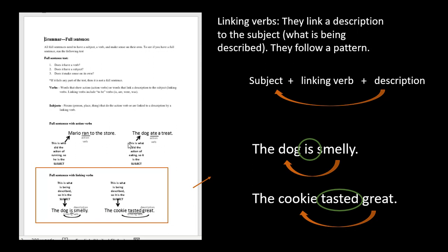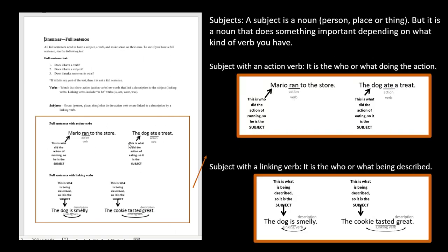We ask ourselves what 'smelly' is describing — the dog — so it fits our pattern. In the next example, 'the cookie tasted great,' 'tasted' could be a physical action, but we know it's a linking verb because it's linking 'great,' the description, back to 'cookie.' Knowing that pattern helps us pick out whether or not we have a verb.